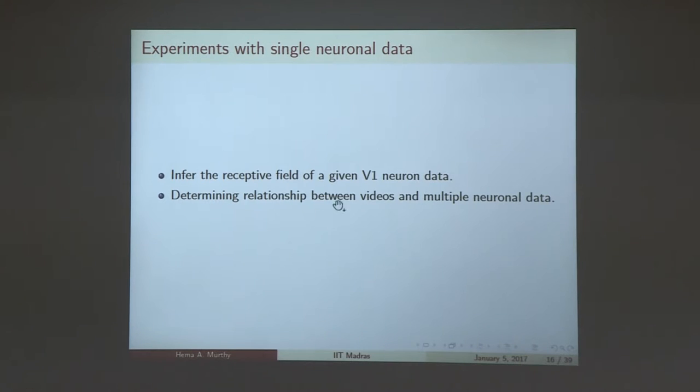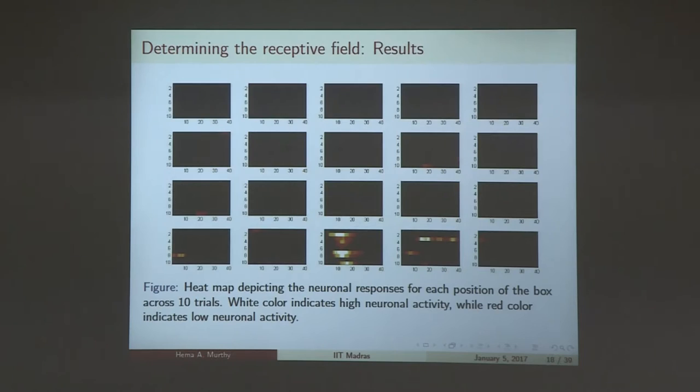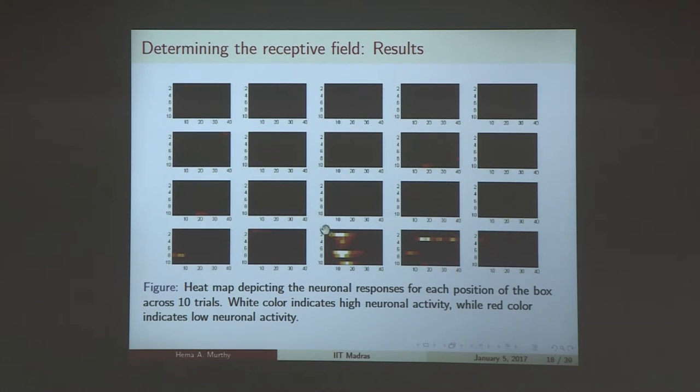The next piece of work was to infer the receptive field of a given neuron. You can get the neuron traces, can you determine the relationship between videos and multiple neuron data? There was one experiment performed by Jack in Souv lab. The mouse is presented with a sparse noise stimulus. There's a white box in the background. The box jumps randomly, and you pick up the neuronal signatures. The idea is to find out if you can determine the receptive field. Is there a correlation between the neuronal signal that you have picked up and the receptive field of the neuron? We found that one particular neuron actually corresponds to location 4,3. The box is jumping in 20 positions. You find that at one position that particular neuron was firing quite a lot. Details are available in the poster.